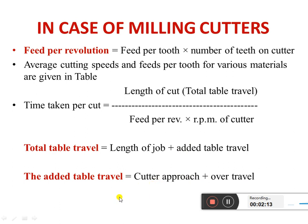The cutter approach is the distance traveled before starting the machining. After machining the component, the cutter will move over the work piece — this is called over travel. Both approach and over travel must be included when calculating the total table travel.